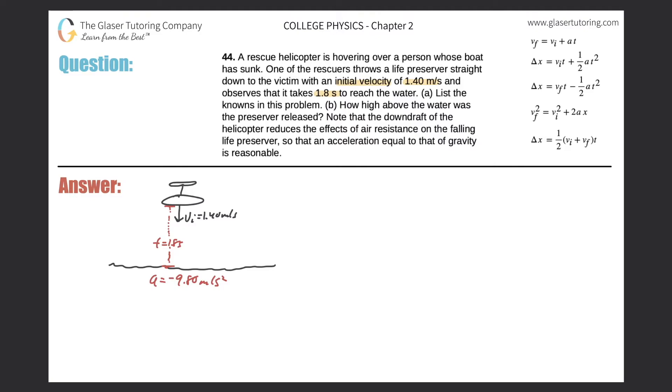What are the unknowns? Well, the unknowns would be the height - what's the height difference between the helicopter and the water? I don't know. And the other variable that I don't know would be the velocity at which this life preserver hits the water with. So those are my unknowns.